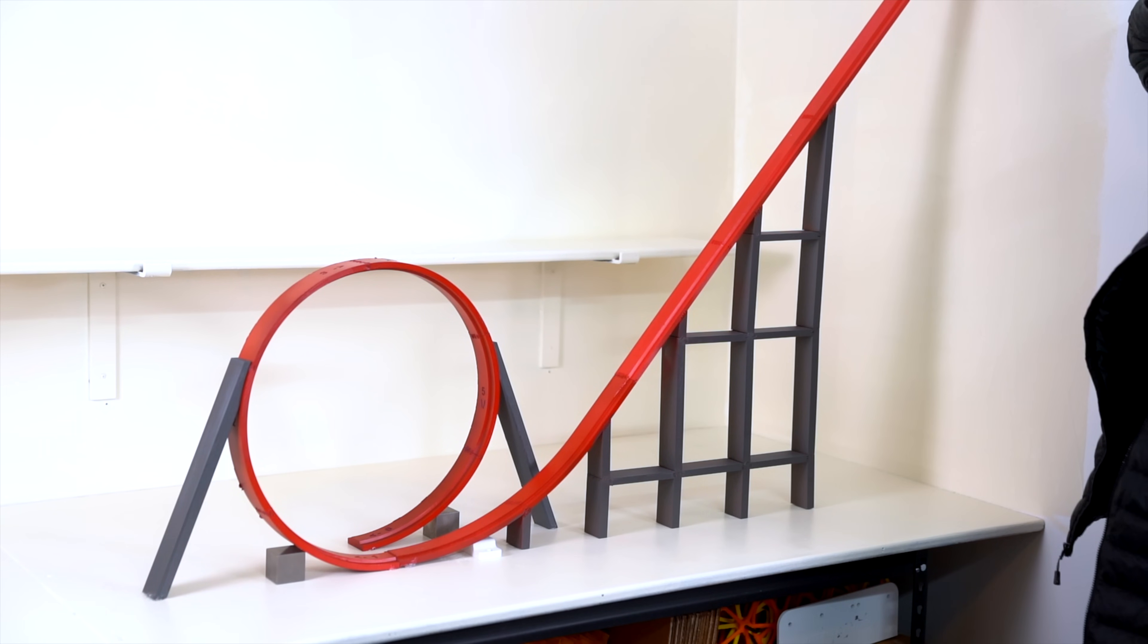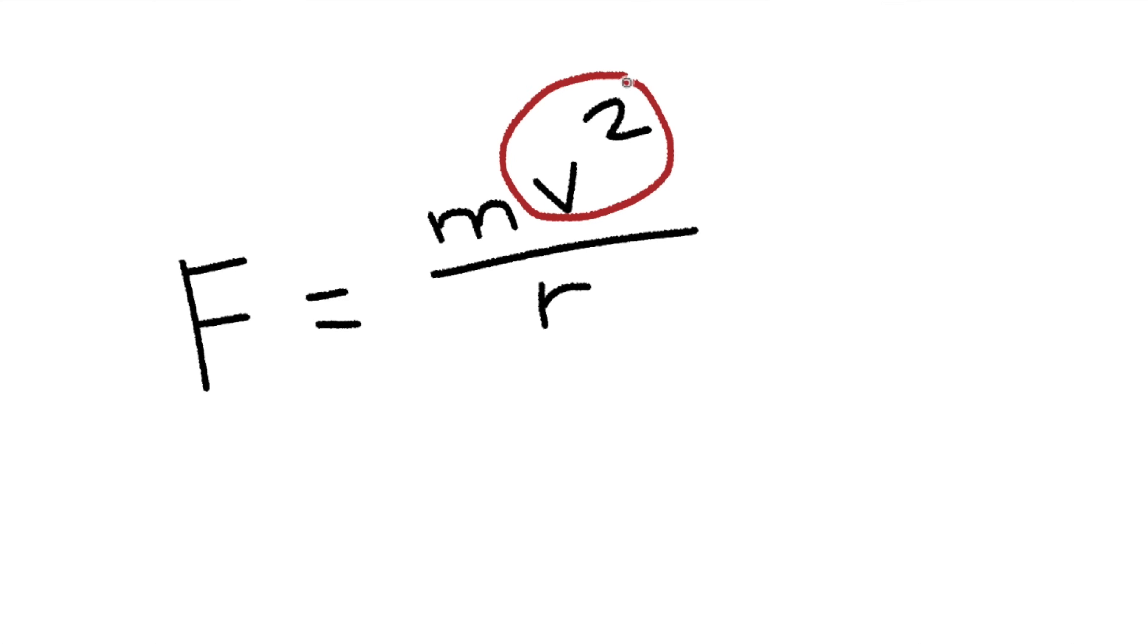So basically the issue with the circular loop is that because it's a constant radius, the force at the bottom of the loop is extremely high. If the velocity is really high we need a fairly large radius in order to keep the force reasonable.